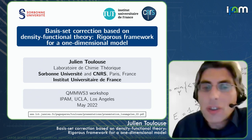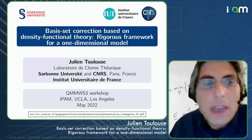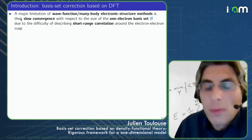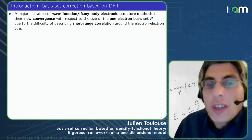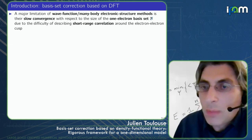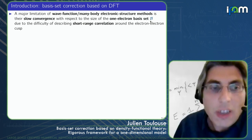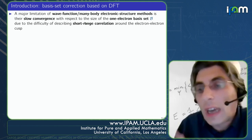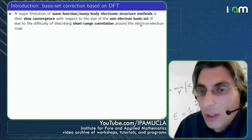I will talk about our work on designing a basis set correction for wave function theory based on DFT. A major limitation of wave function or many-body electronic structure methods is their slow convergence with respect to the size of the one-electron basis set. This slow convergence is due to the difficulty of describing short-range electron-electron correlation around the electron-electron cusp condition.